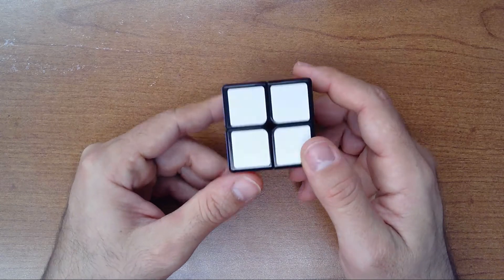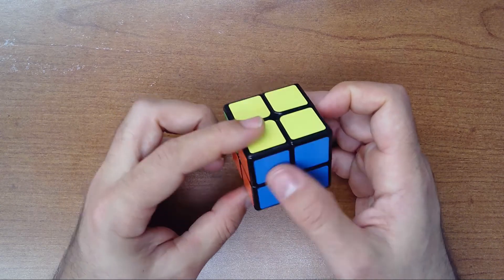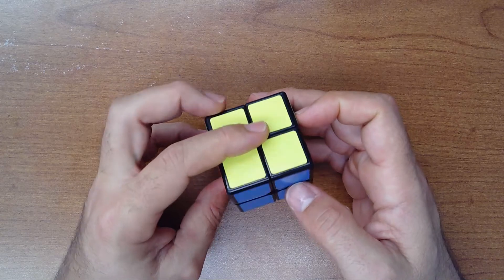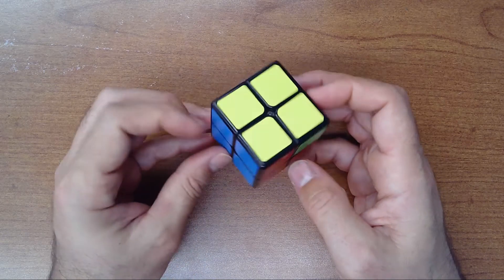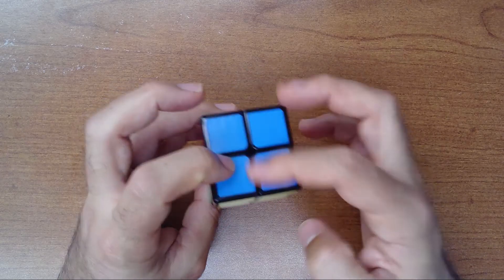And also we have the blue one. We have three faces now: yellow, the blue one, and the white. So what we do now is we put the ones we solved in the back. We have top and bottom already solved.